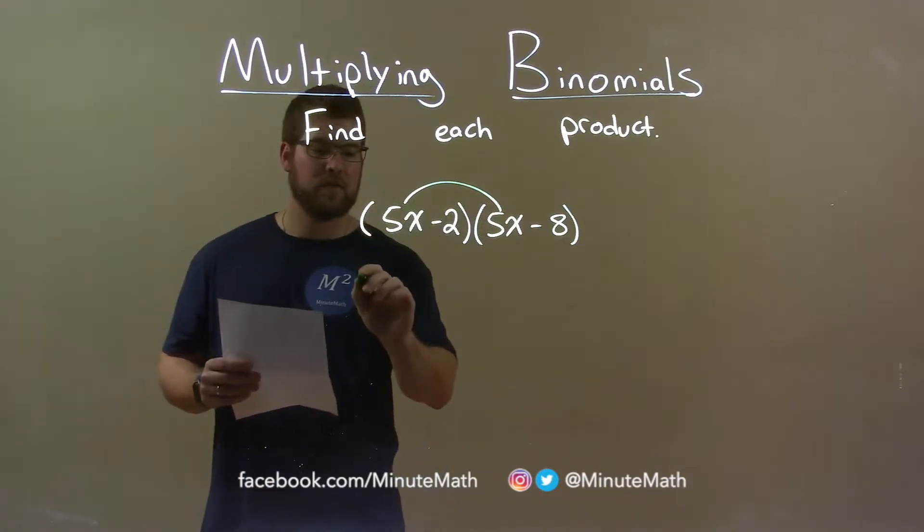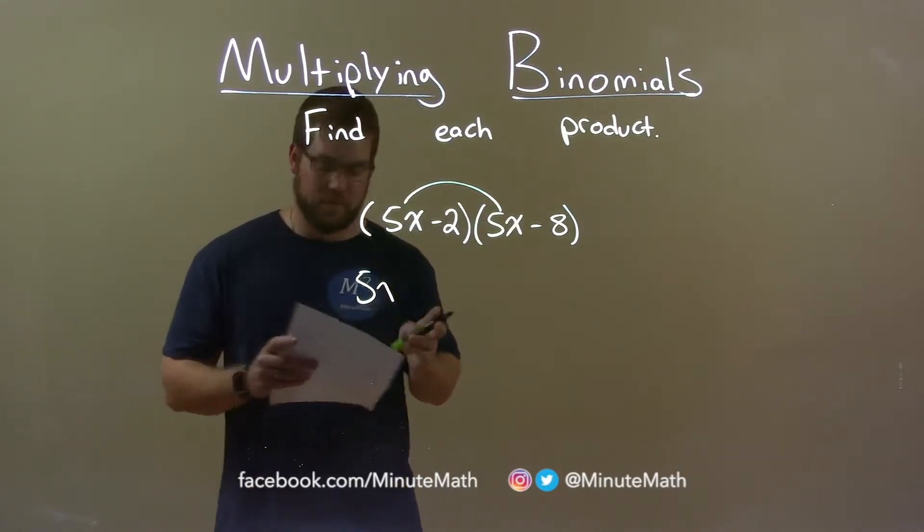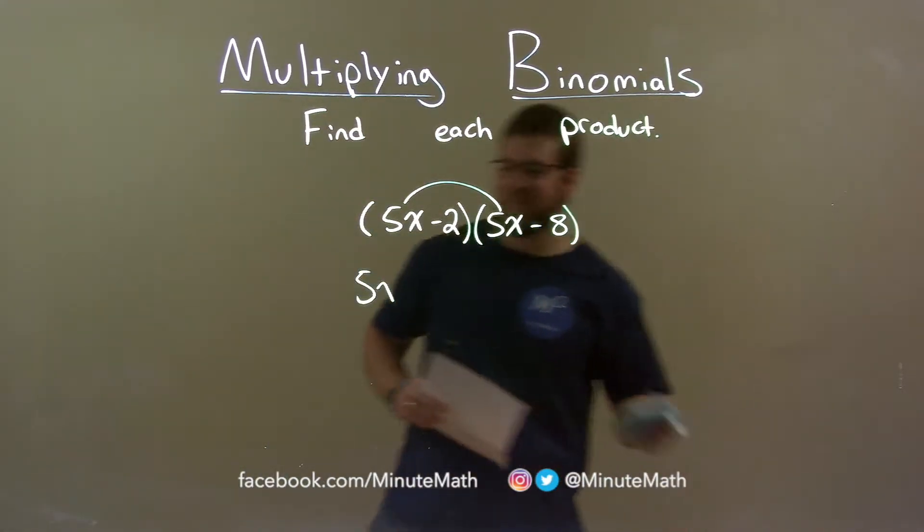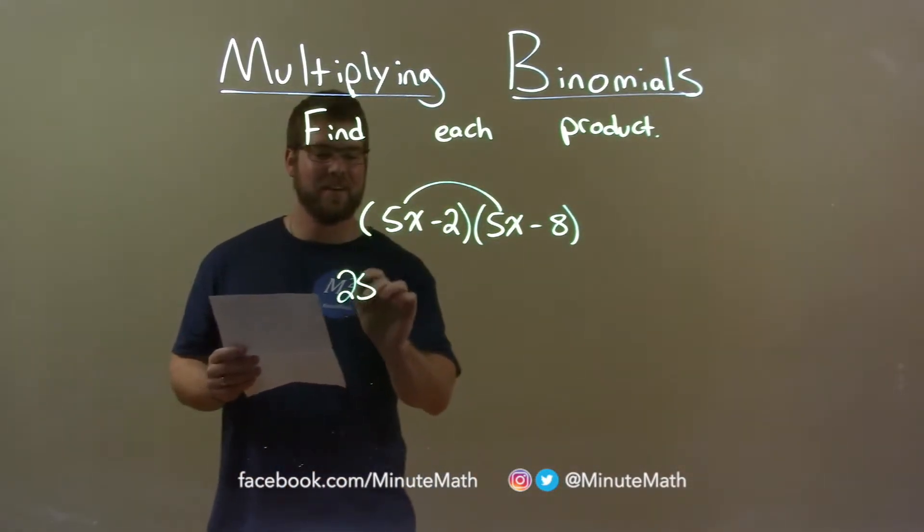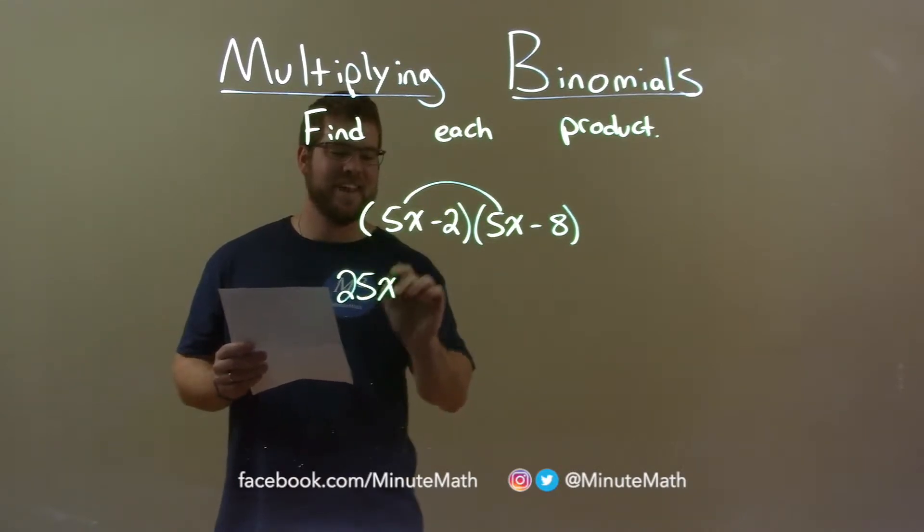5x times 5x is a 5—oops, not 5, is 25. Excuse me, I'm getting ahead of myself there. 5 times 5 is 25, and x times x is x squared.